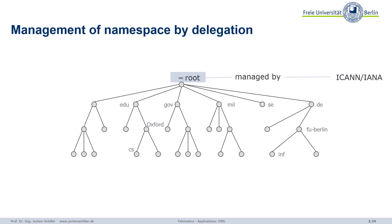On the second level, we have many organizations because it's a different organization handling the country code for Sweden compared to the one for Germany, for example. And as you saw, we also have .museum — that's a different organization, sometimes companies, sometimes different types of organizations. So in Germany, it's DENIC.